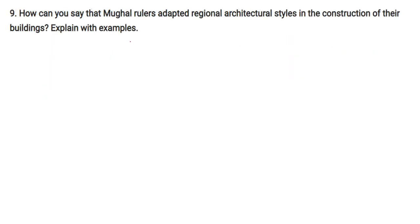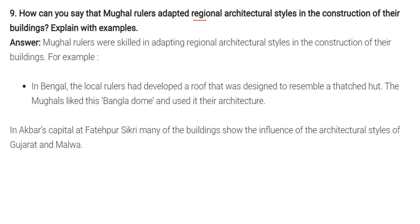Mughal rulers were skilled at adapting regional architectural styles in their buildings. For instance, in Bengal, local rulers had developed a roof designed to resemble a thatched hut (tajja); the Mughals adopted this bangla dome and used it in their architecture. At Akbar's capital Fatehpur Sikri, many buildings show the influence of the architectural styles of Gujarat and Malwa.